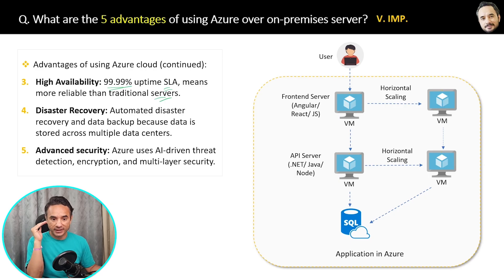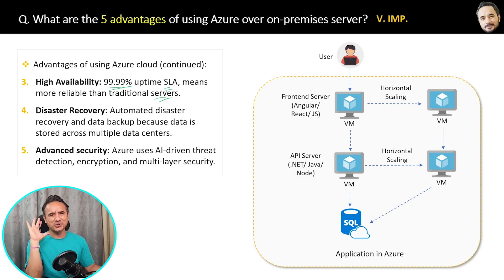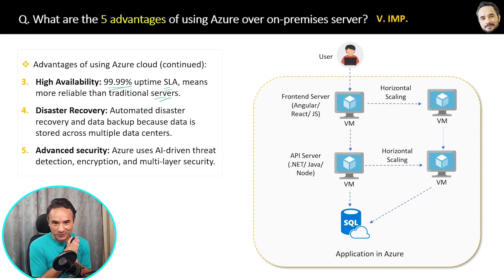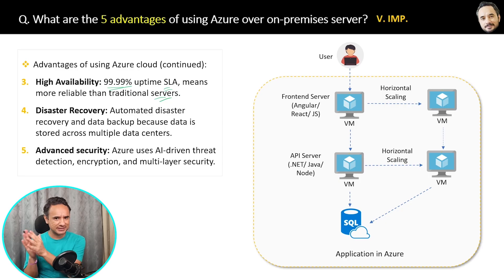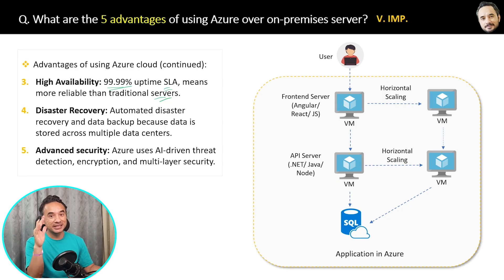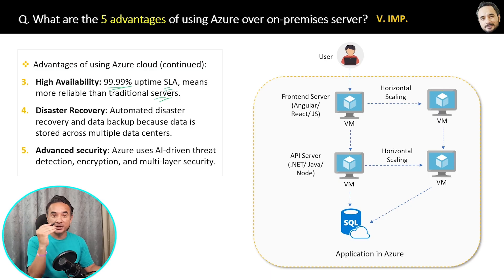The fifth advantage is advanced security. Azure uses AI-driven threat detection, encryption, multi-layer security, two-factor authentication, and much more. In short, you do not have to worry about server hacking, malware, etc. I hope you now completely understand why we should use Azure cloud instead of on-premises servers.